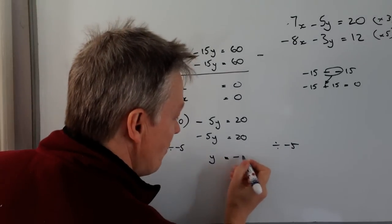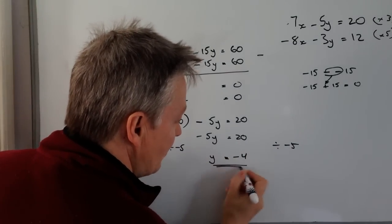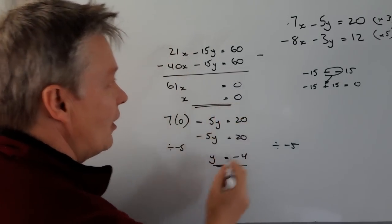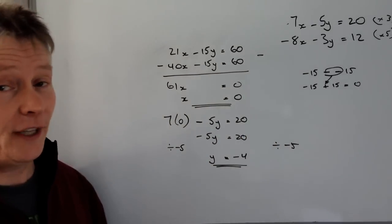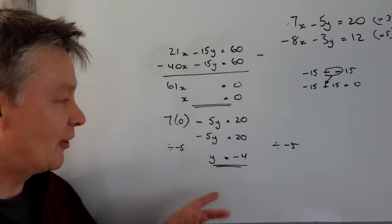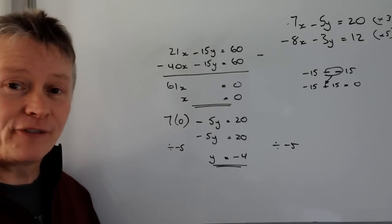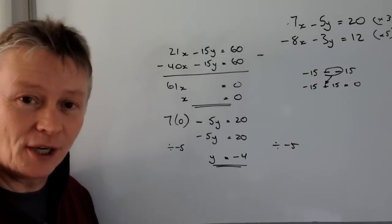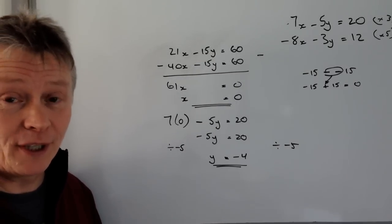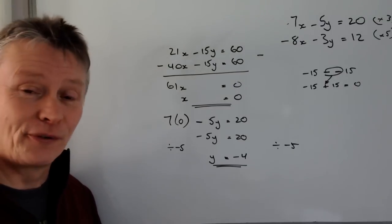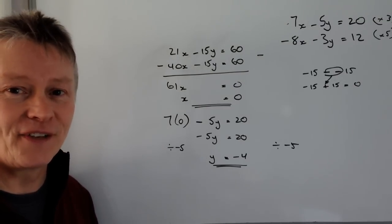So in this particular set of simultaneous equations, the value of x is zero. The value of y is minus 4. I hope that's been OK for you. It's a little bit tricky, but please have a look at the playlist. Please do add a comment below if you're not sure about anything. I look forward to seeing you inside the next video.